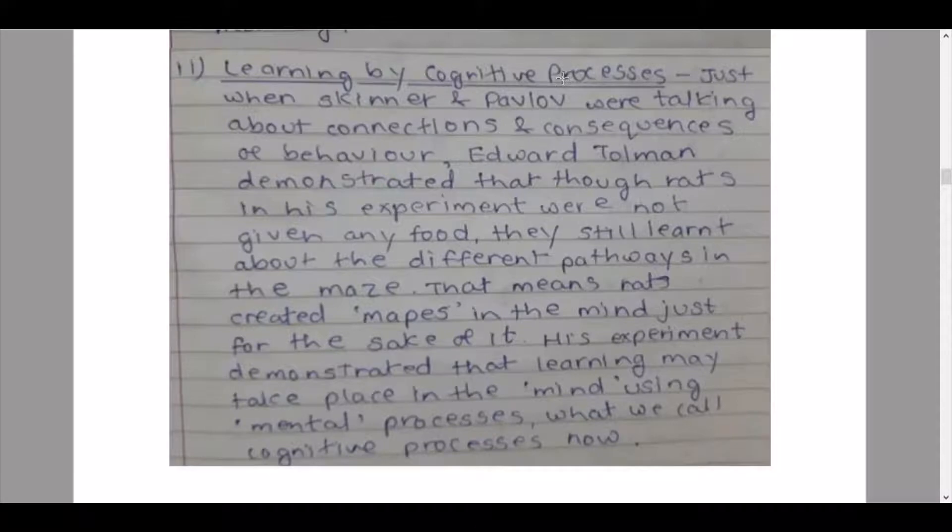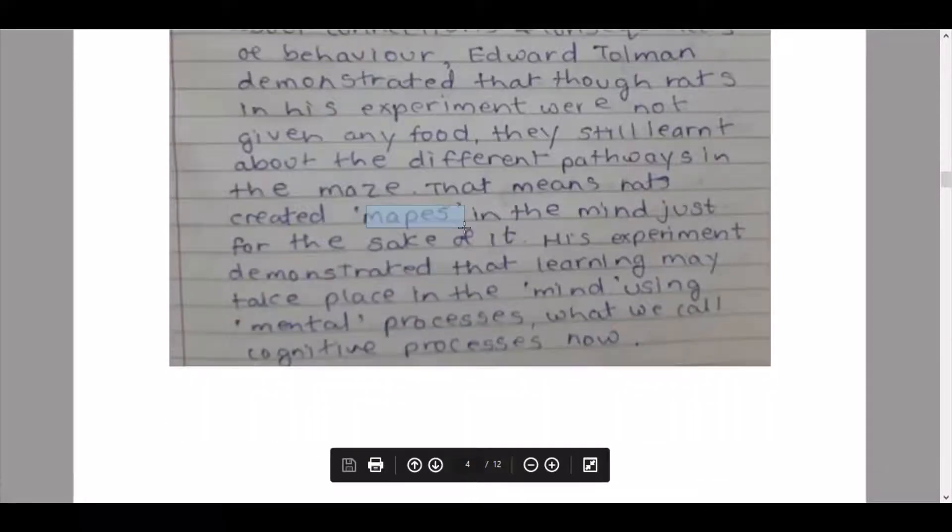Then we have our next process, that is learning by cognitive processes. Just when Skinner and Pavlov were talking about connections and consequences of behavior, Edward Tolman demonstrated that rats in his experiment were not given any food, they still learned about the different pathways in a maze. That means they created maps in the mind just for the sake of it. His experiment demonstrated that learning may take place in the mind using mental processes, what we call cognitive processes.